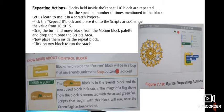Know more about Control block. See here Forever block. Blocks held inside the Forever block will be in a loop that never ends unless the stop button is clicked. To run a script, When Flag Clicked block is in the Events block and the most used block in Scratch. The image of a flag shows how the block is connected with the actual green flag. Script that begins with this block will run once the green flag has been clicked. To move a block anywhere in the script's area, click on the top block of the script and drag the stack to the place where you want to place it.